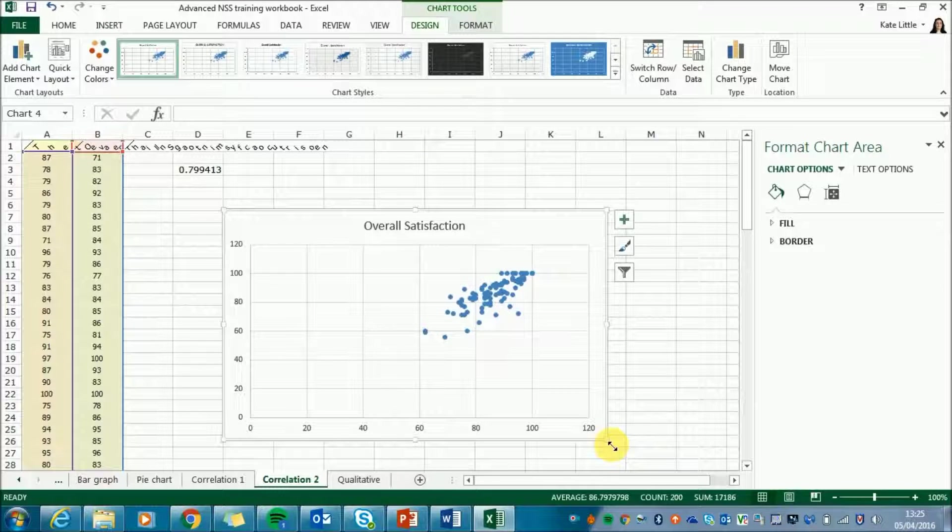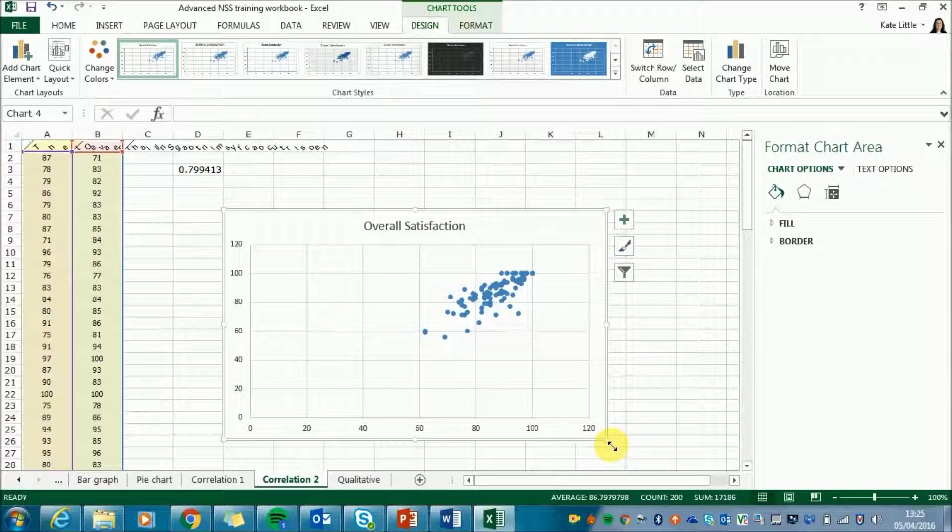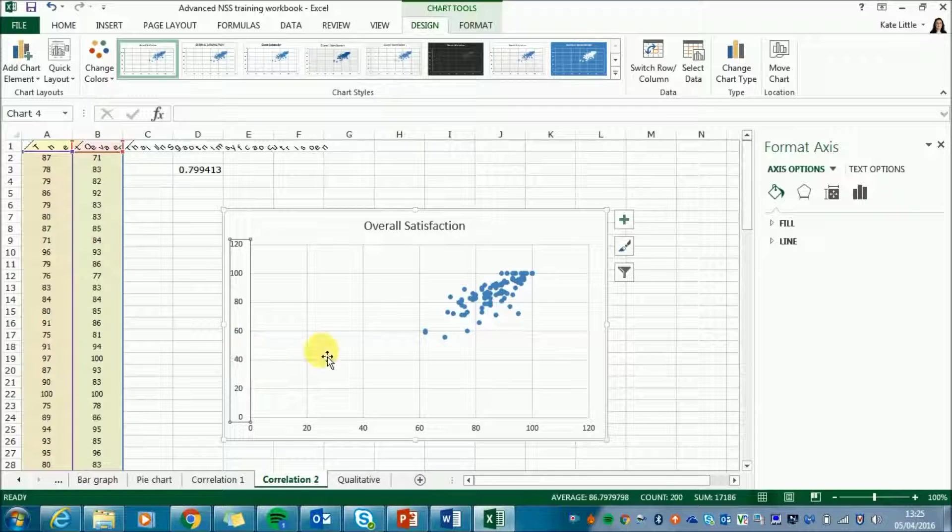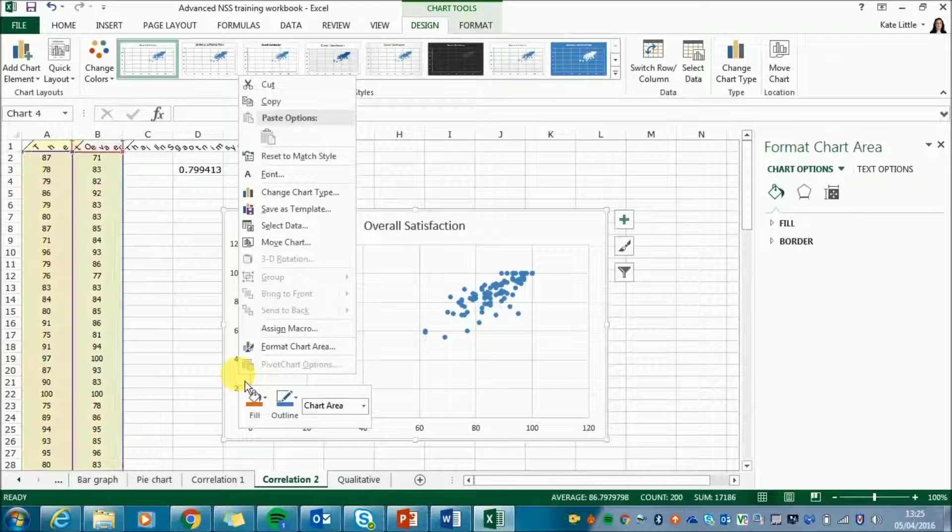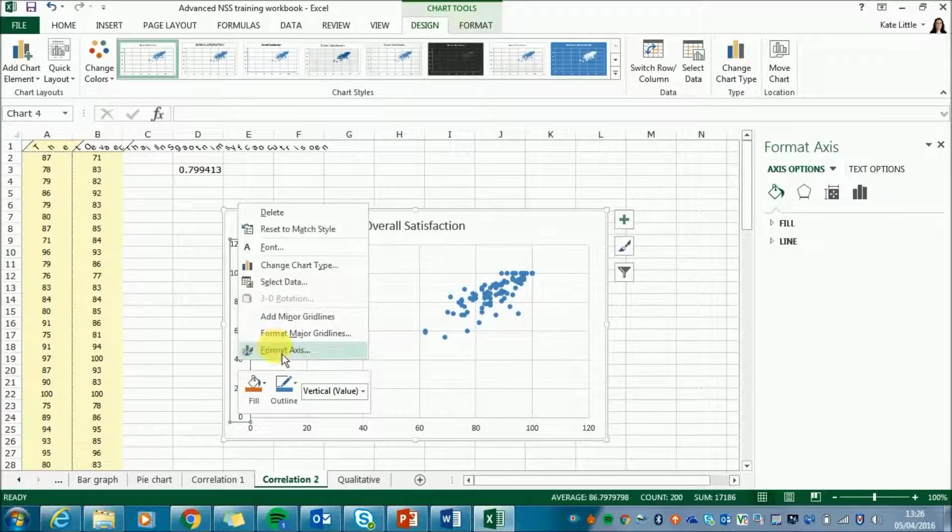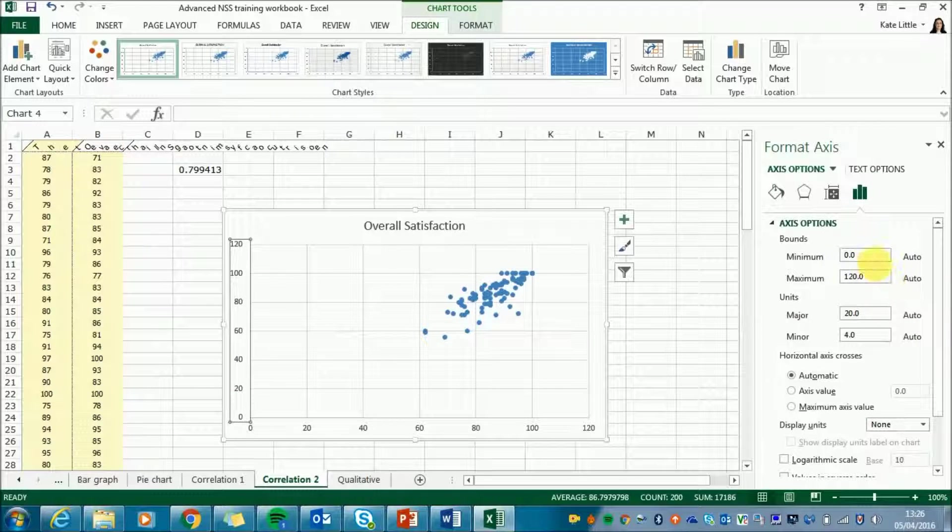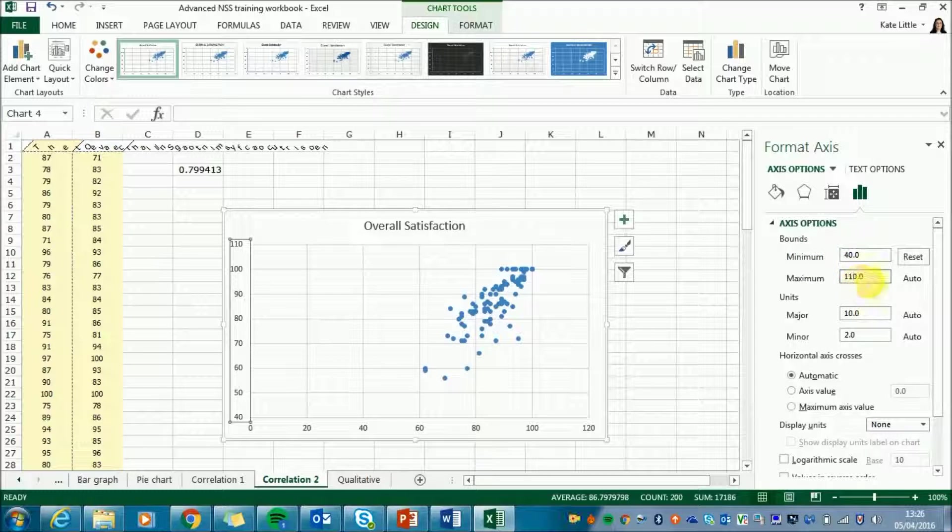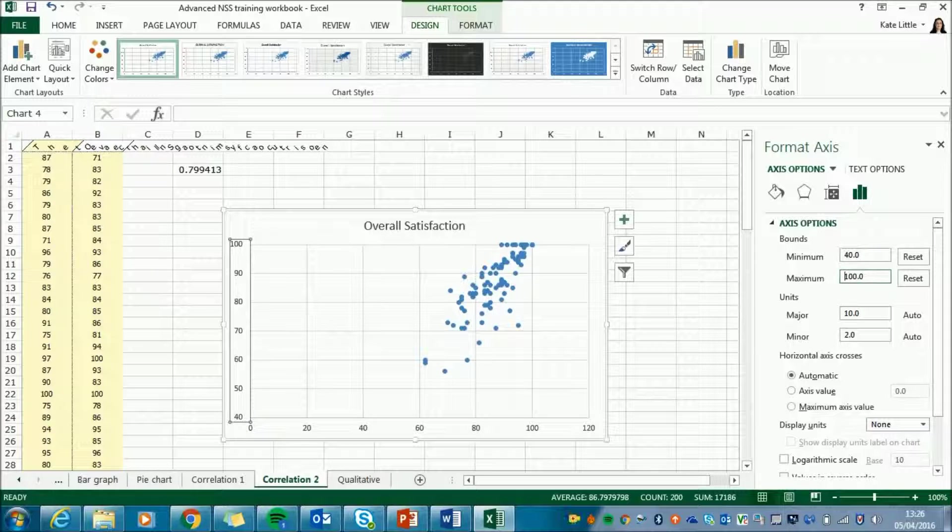Now this doesn't look exactly like the graph that we showed you before because there's a load of blank space here that we can get rid of. So you can see on the vertical axis there are no scores below 40. So if we select the axis and right-click Format Axis, change the minimum to 40 and change the maximum to 100 because we know it's percentages, it won't get bigger than that.